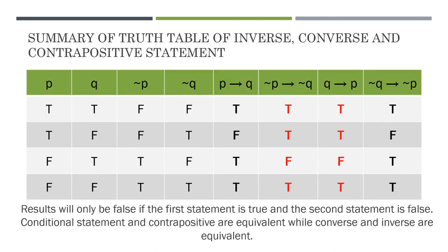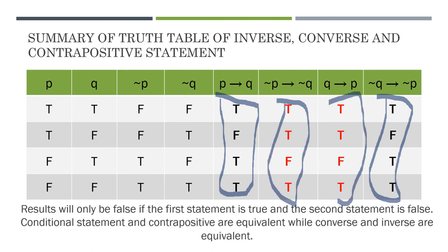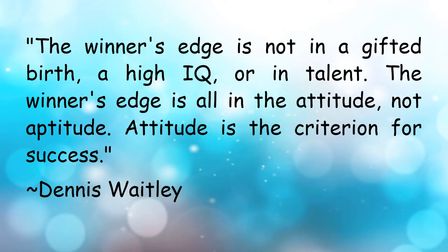This is the summary of your truth table. In addition to the first statement being true and the second statement being false giving you a false result, we can also say that your conditional statement as well as your contrapositive are equivalent. And then your inverse and converse statements are equivalent as well. Thank you very much for watching this video. I hope you have learned a lot.